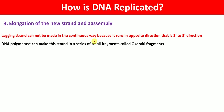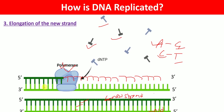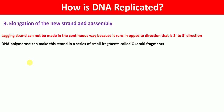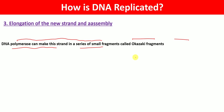So far we have only used one template strand — the three prime to five prime template strand — but we still have one more template strand, which runs from five prime to three prime. The lagging strand cannot be made in a continuous way because it runs in the opposite direction. DNA polymerase can make this strand in a series of small fragments called Okazaki fragments.